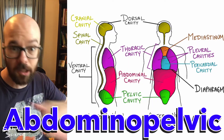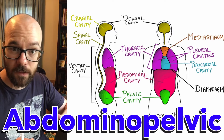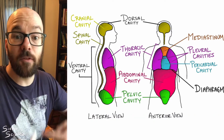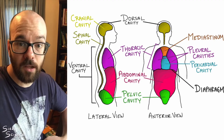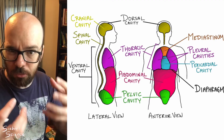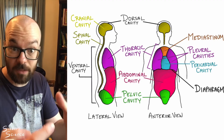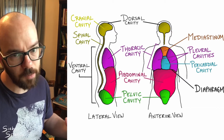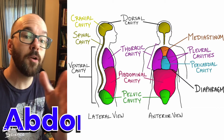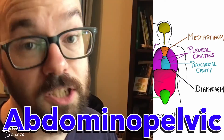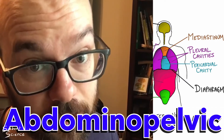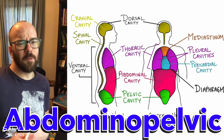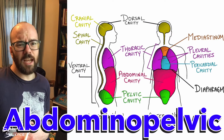A lot of times the abdominal cavity and the pelvic cavity are combined into one term — the abdominal pelvic cavity. There's not really a clear line between the two. Unlike the diaphragm that separates the thoracic from the abdominal cavity, there's no actual tissue or membrane separating the abdominal from the pelvic. So we combine them, which is especially useful if you want to use long words to impress your friends — 'I just have an abdominal pelvic cavity ache today.'